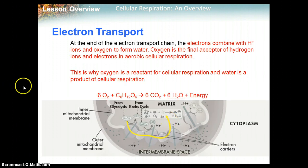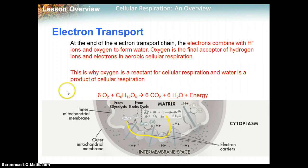At the end of the electron transport chain, the electrons combine with hydrogen ions and oxygen to form water. Oxygen is the final acceptor of hydrogen ions and electrons in aerobic cellular respiration. This is why oxygen is a reactant for cellular respiration, and why water is a product — six O2 go in and six water molecules come out.